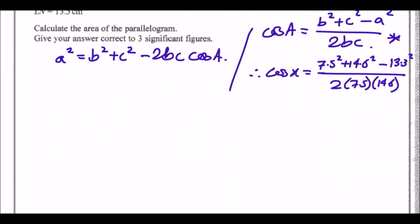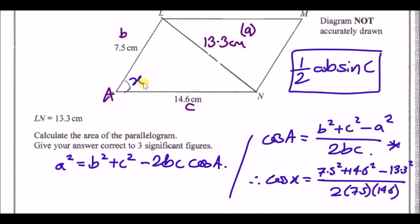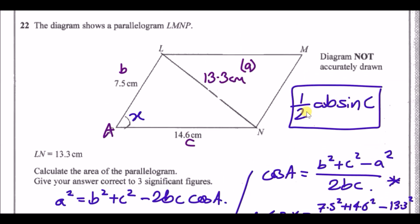Working this out gives cos x ≈ 0.422, and taking the inverse cosine gives an angle of about 65 degrees. Now we have the angle and can use the triangle area formula: area = half × a × b × sin C.